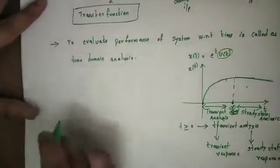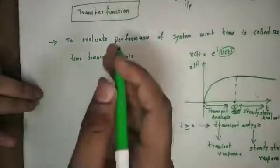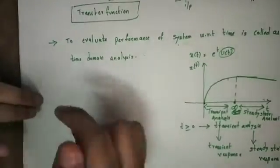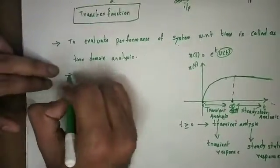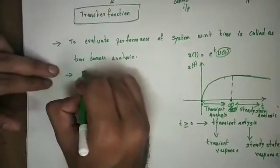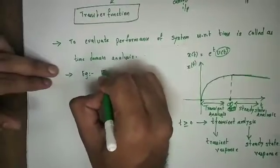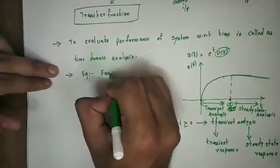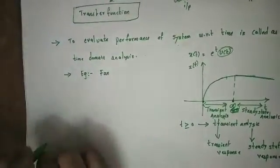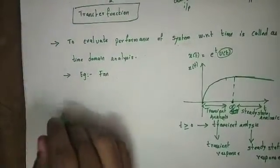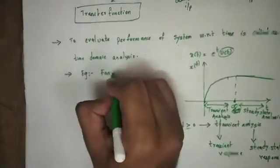Now let's talk about a general example. Let's talk about control systems. Let's take a fan as an example. A fan is nothing but a control system. Let's talk about a fan.